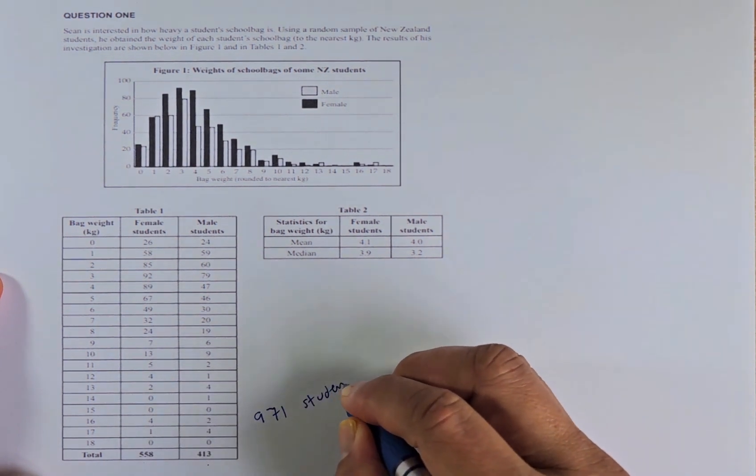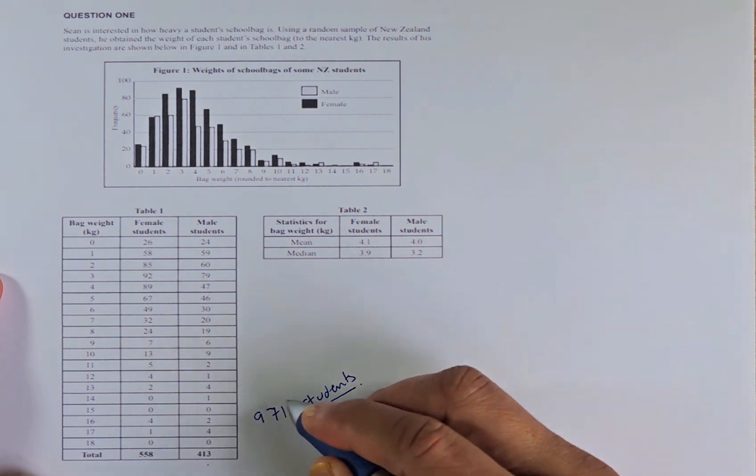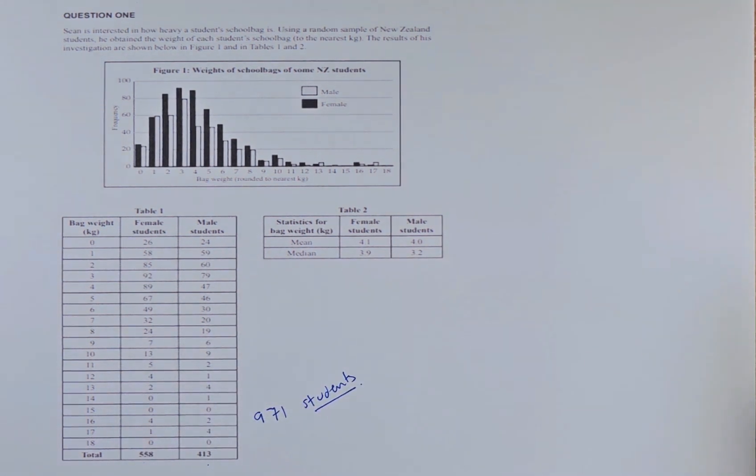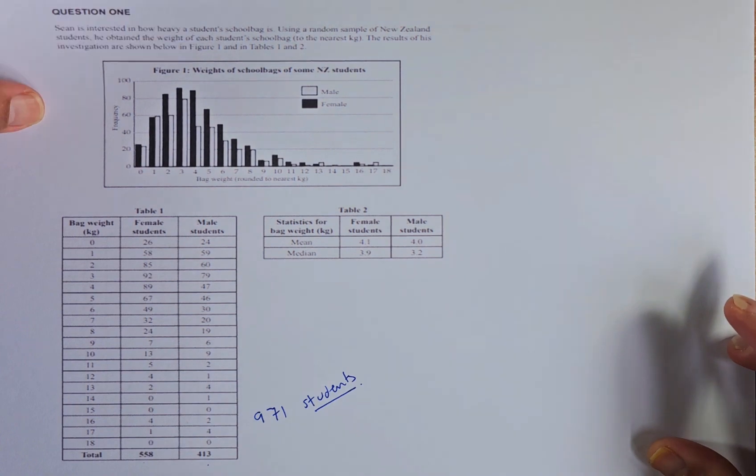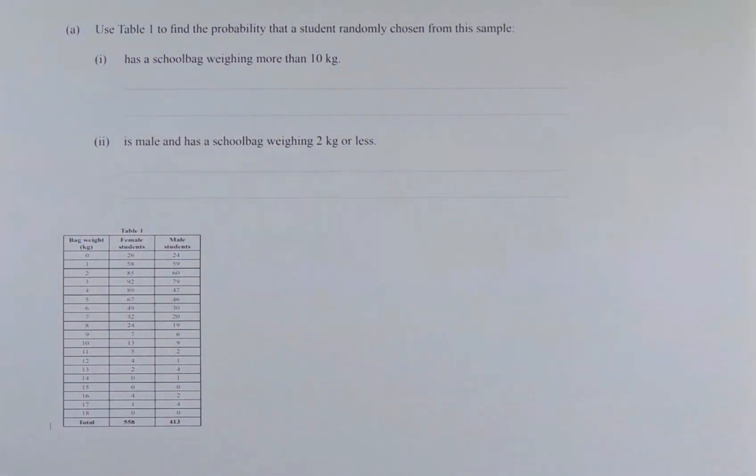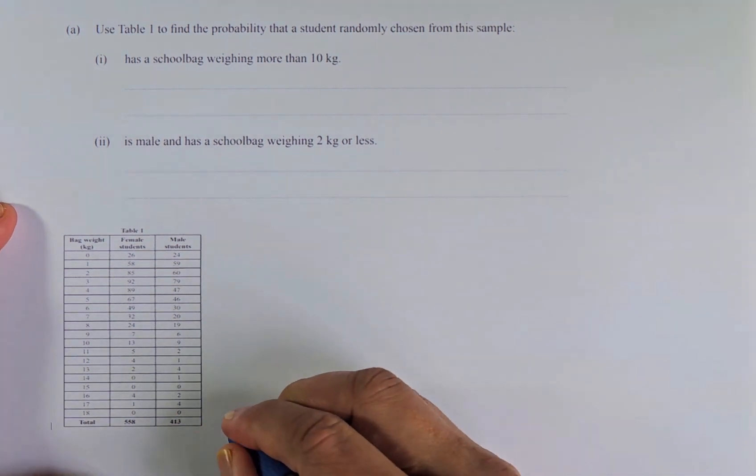This number is important when you calculate probability. If you get this number wrong, all the questions will be wrong. So remember, it's 971 students in total, and we are going to answer the question now.